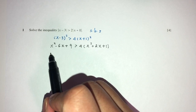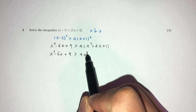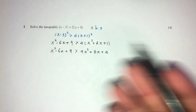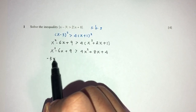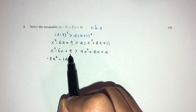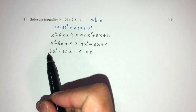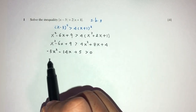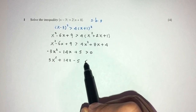Now let's expand. We have x squared minus 6x plus 9, more than 4x squared plus 8x plus 4. Let's send everything to one side: 1 minus 3 gives minus 3 for x squared; minus 6 minus 8 gives minus 14 for x; plus 9 minus 4 gives plus 5. Now let's change that minus sign — I don't like to work with minus. Sending everything to the other side gives 3x squared plus 14x minus 5, with the inequality sign flipping.